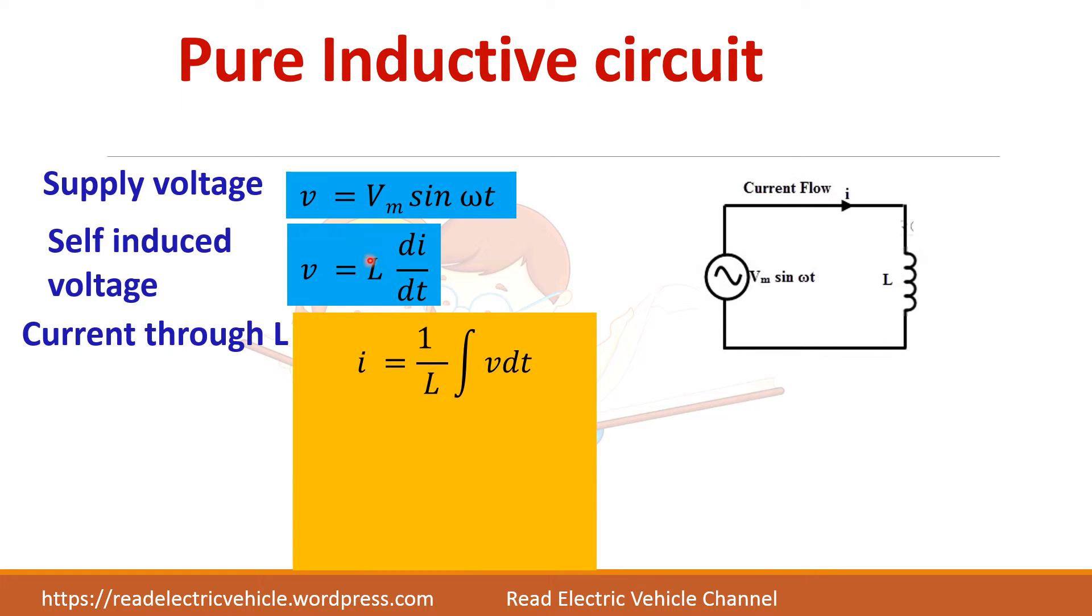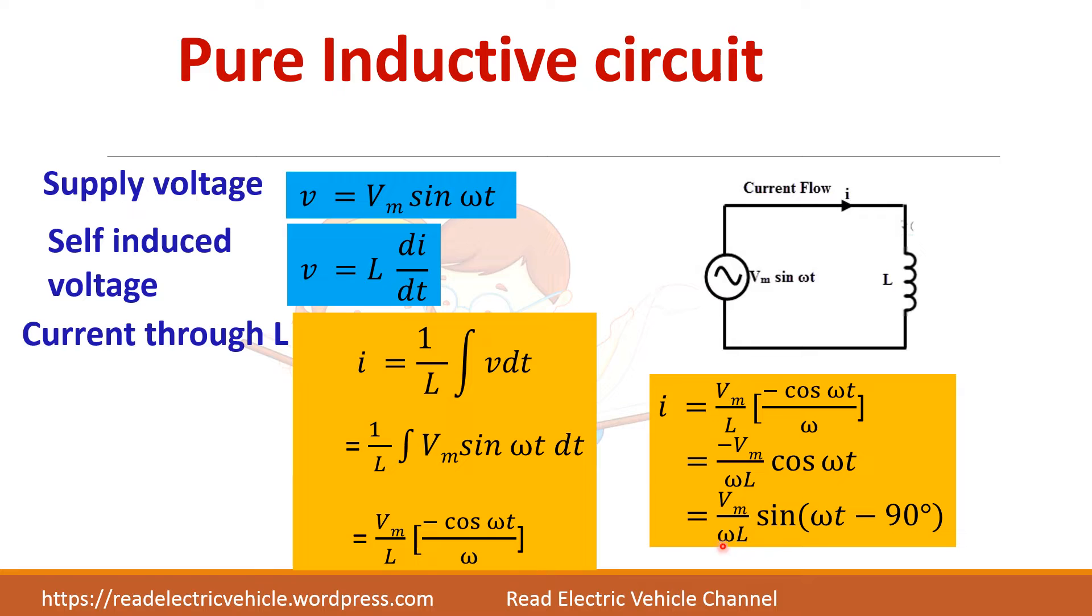So I equals 1/L into integral of V dt. V is Vm sin ωt, so if you integrate and simplify you will get minus Vm/(ωL) into cos ωt. I am going to convert this into sin form so that I can compare with the voltage and find the phase relationship between V and I.